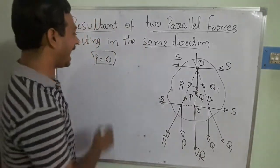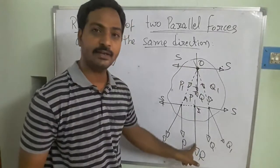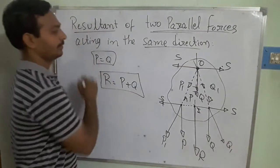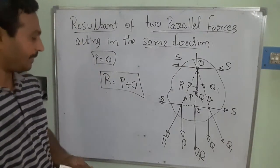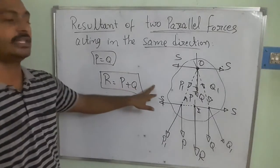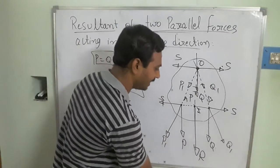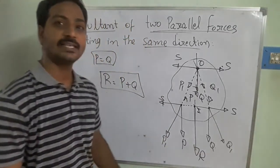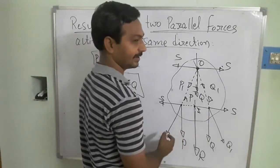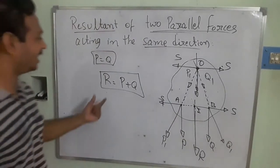The resultant component R equals P plus Q, because the two forces are acting in the same direction. So R = P + Q. The object is going to move in the same direction as both P and Q. We can observe that the resultant maintains a certain distance between points A and B, which must be considered. Now that we have the resultant magnitude R = P + Q, we need to find the line of action or position of the resultant component.